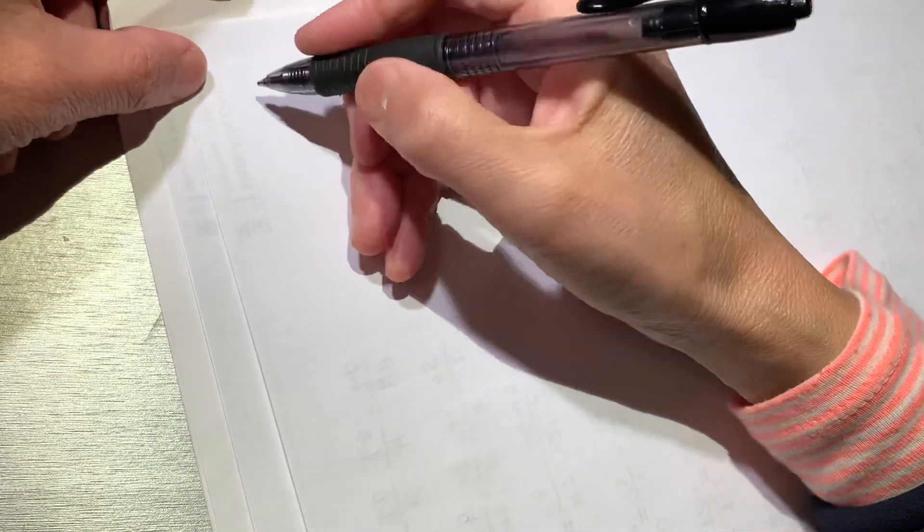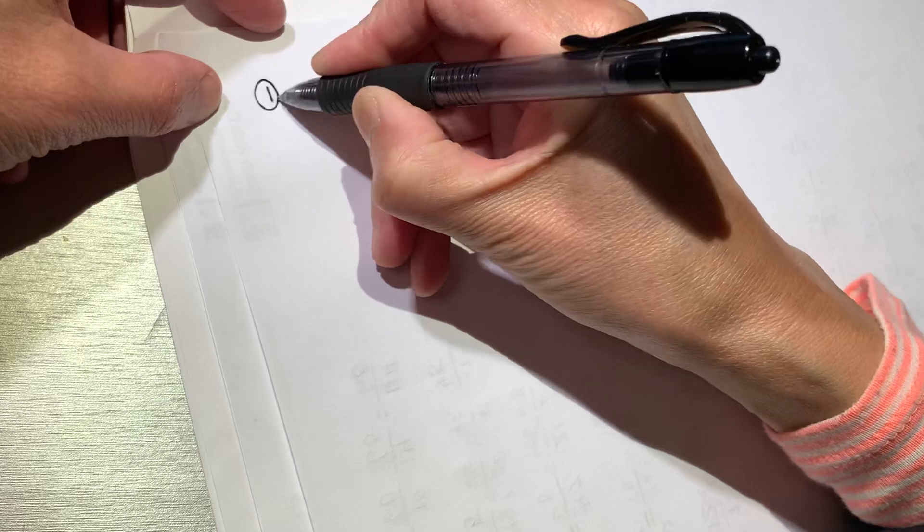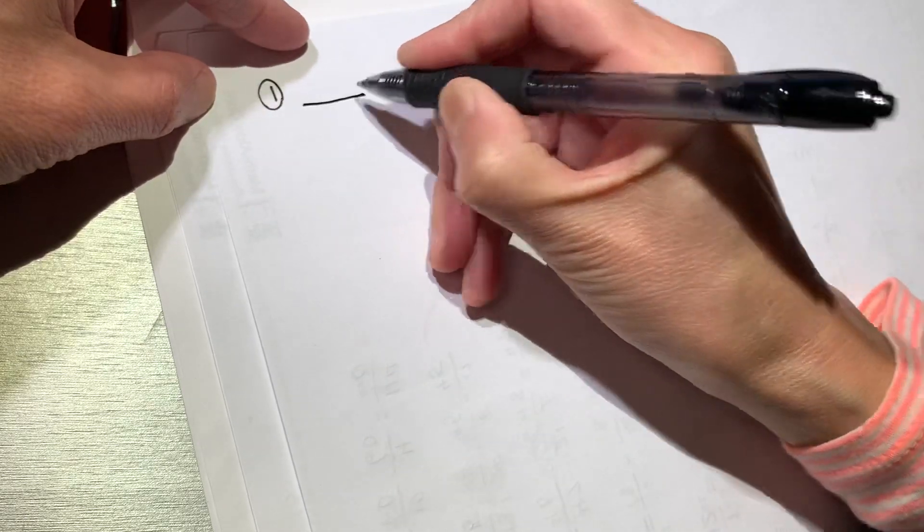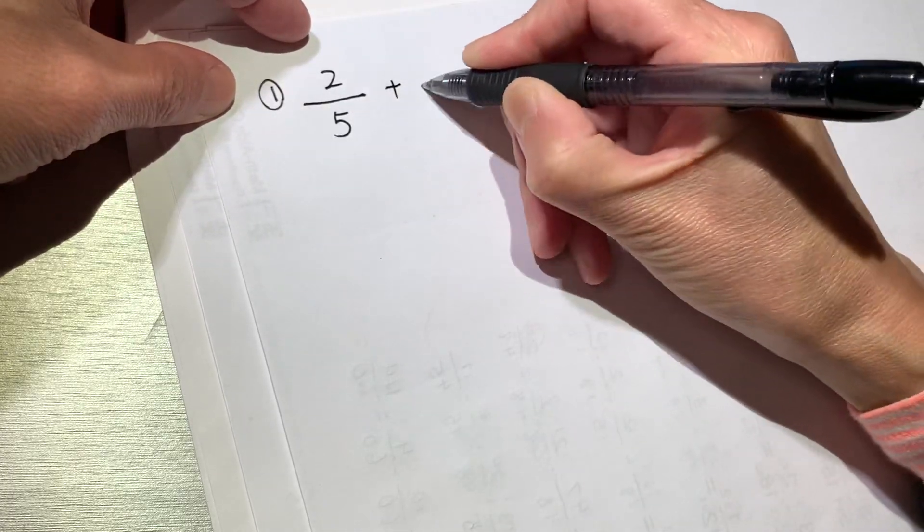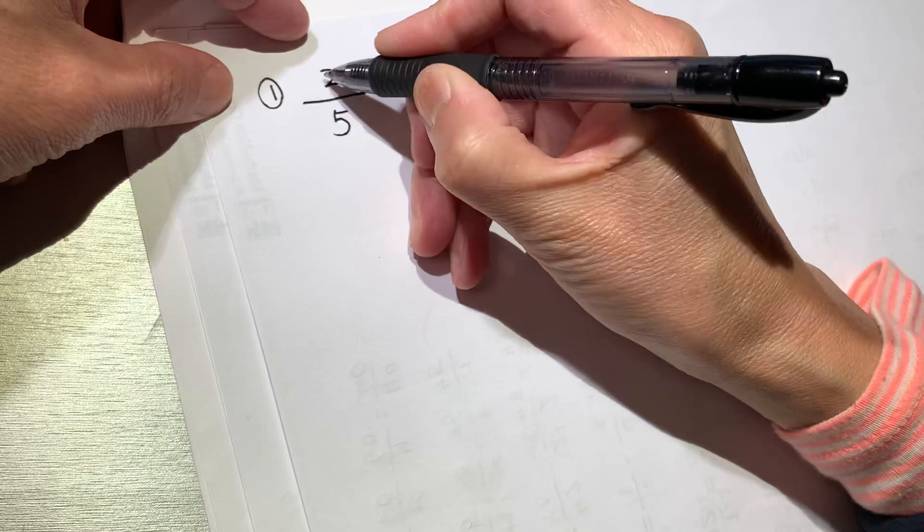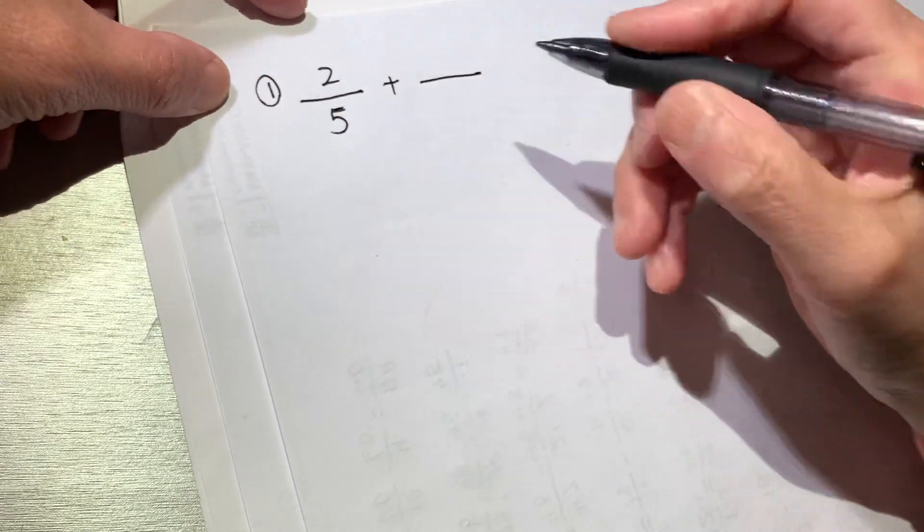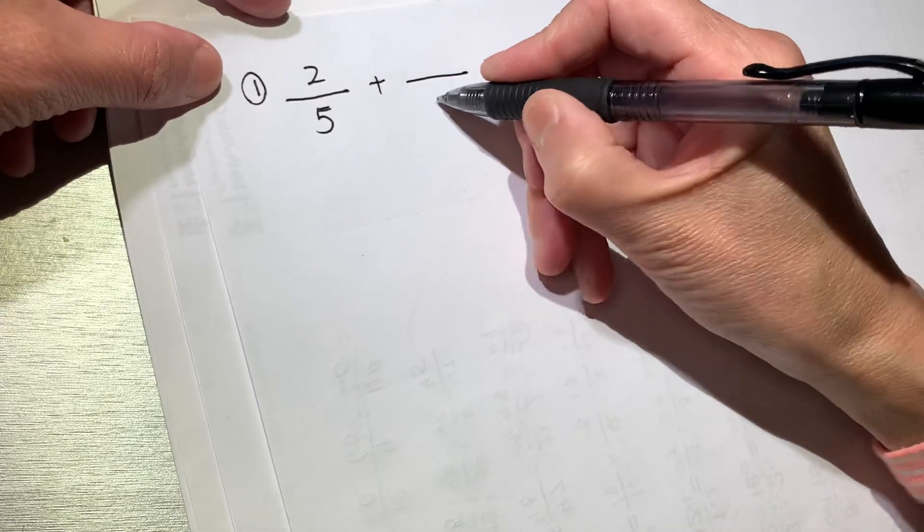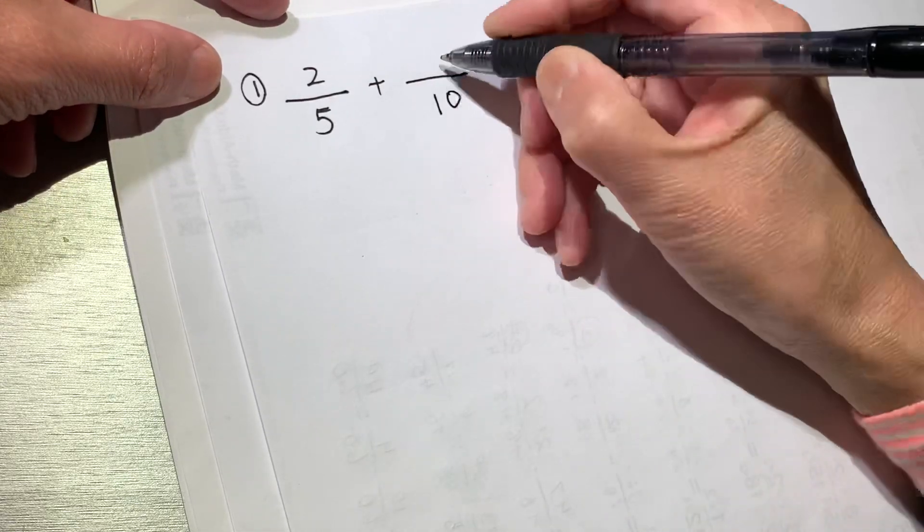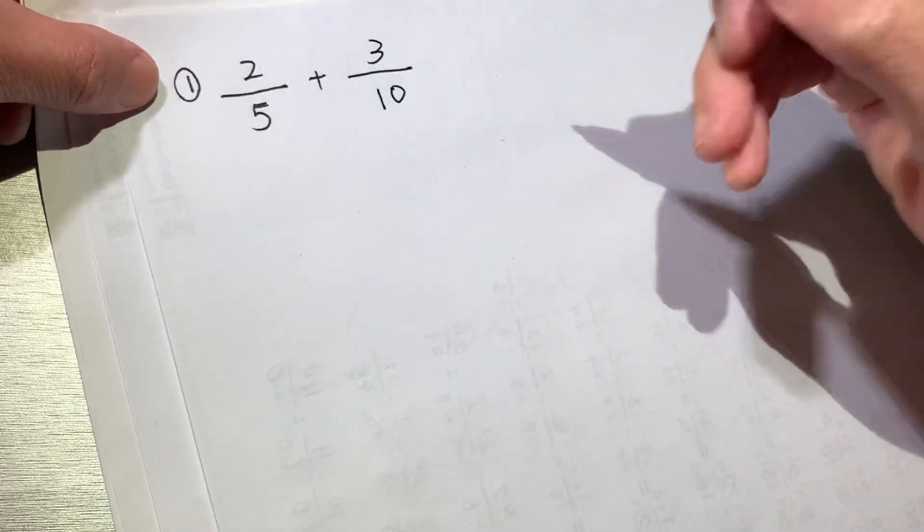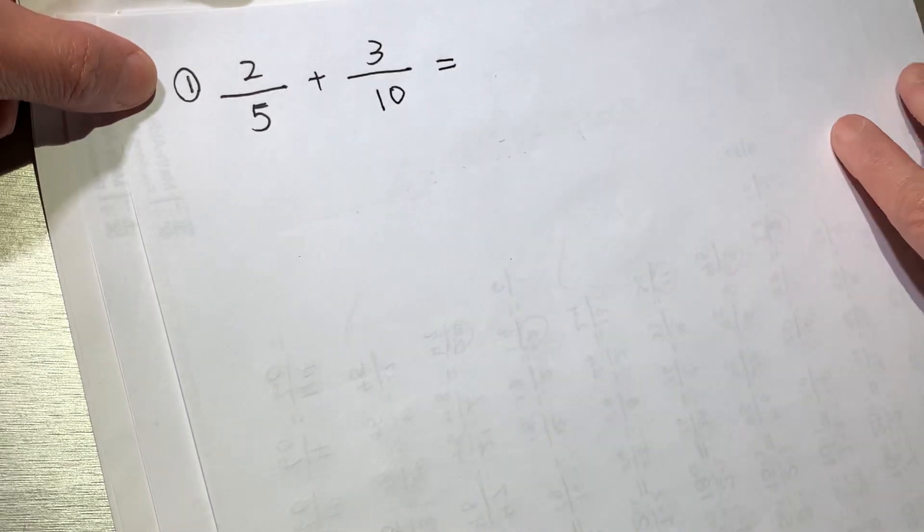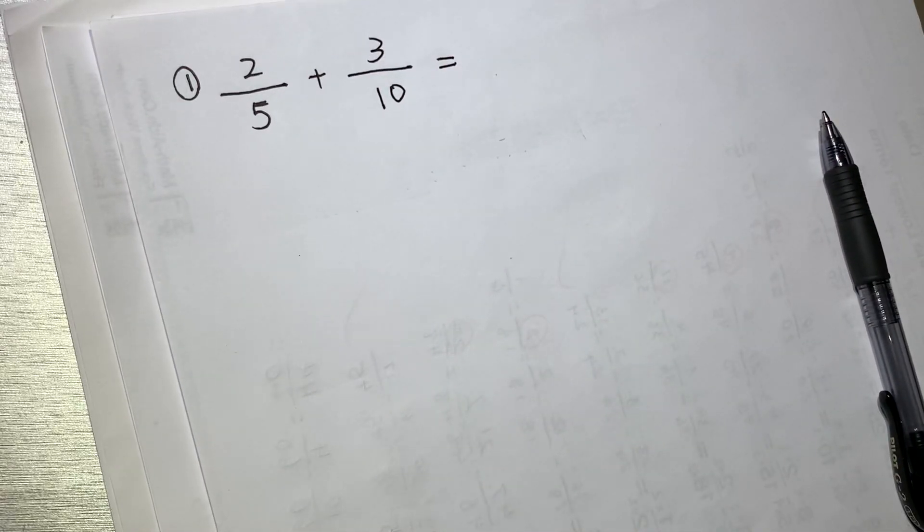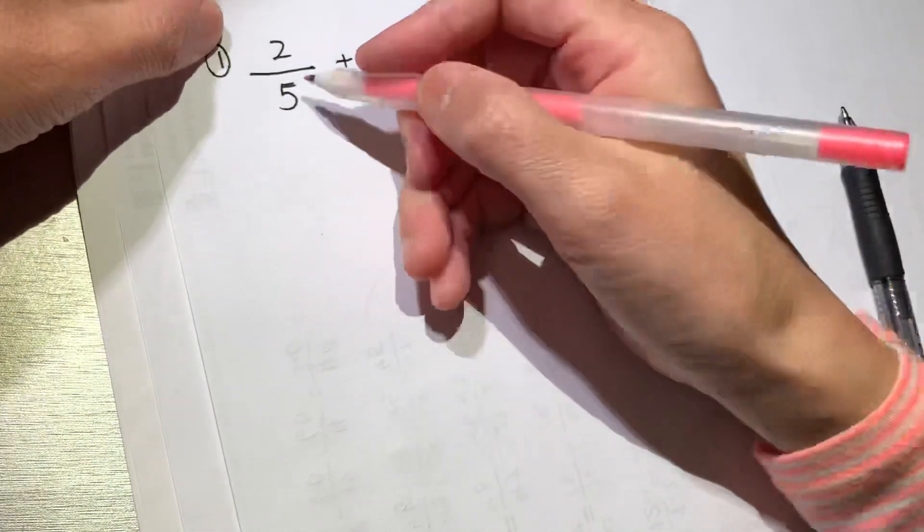Now we will do something different, when we have the denominator, it's different. First question. 2 over 5 plus 3 over 10. So the denominator is not the same. We need to do some treatment for this matter. We need to make the denominator the same.